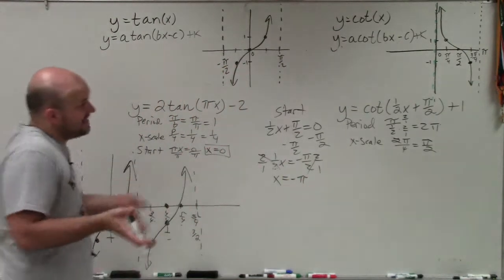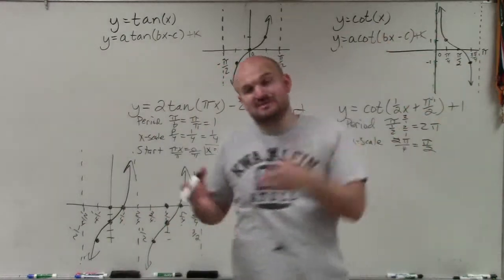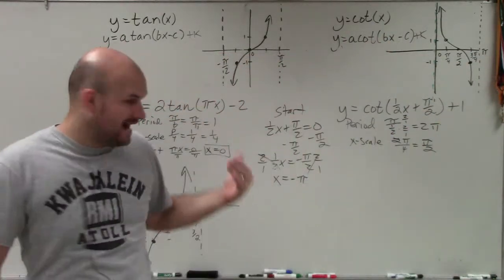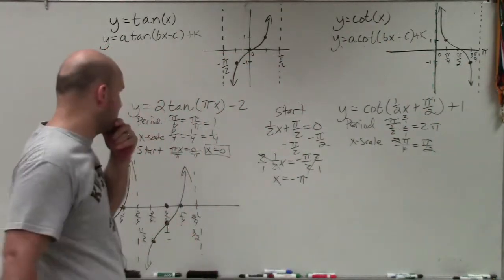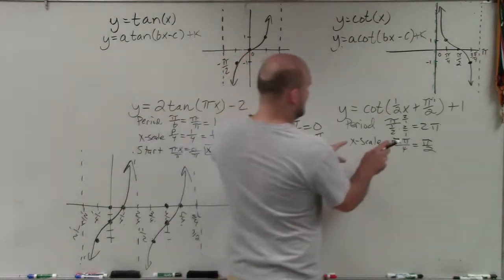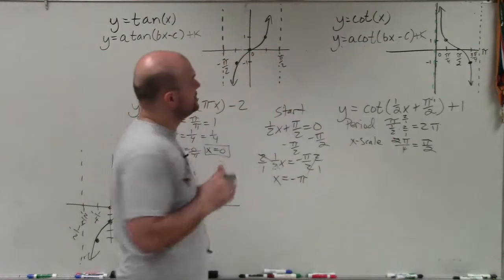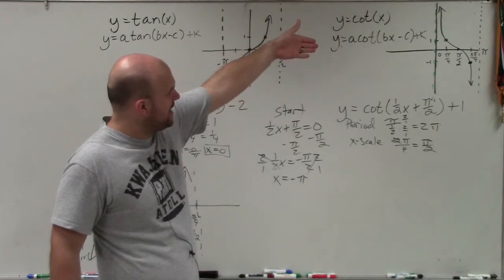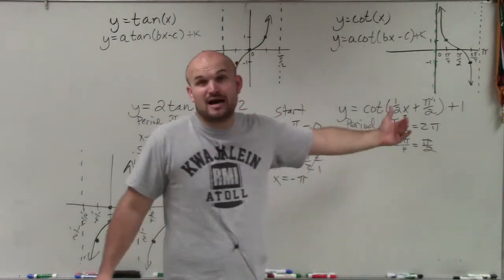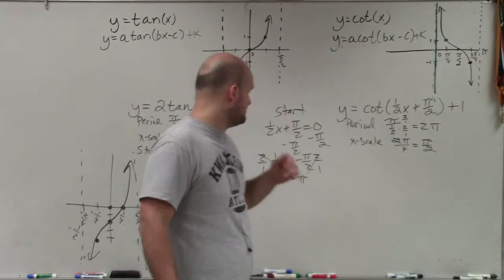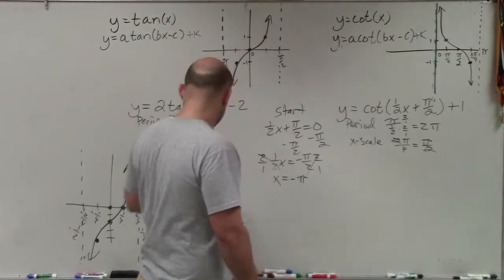So therefore, in this one, instead of starting at 0, I'm now going to be starting at negative π. And my x scale here is going to be π/2, which is different than typically we'll have it as π. So now you can see my period is actually now at 2π, and my x scale is going to be at π/2.